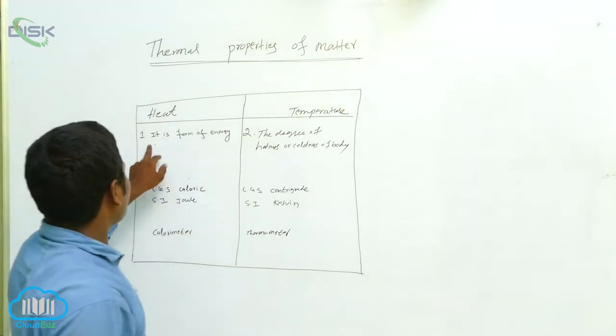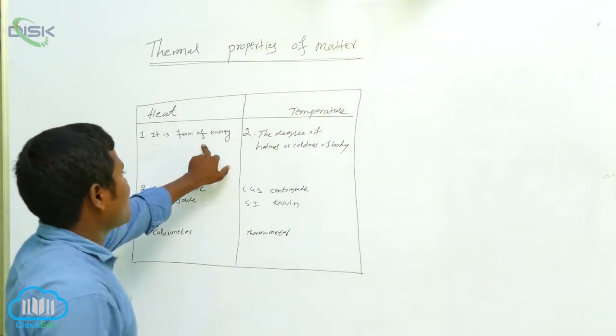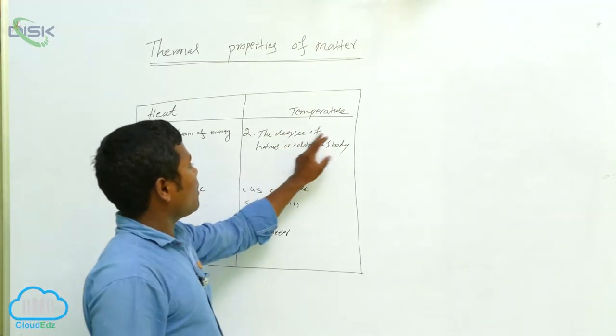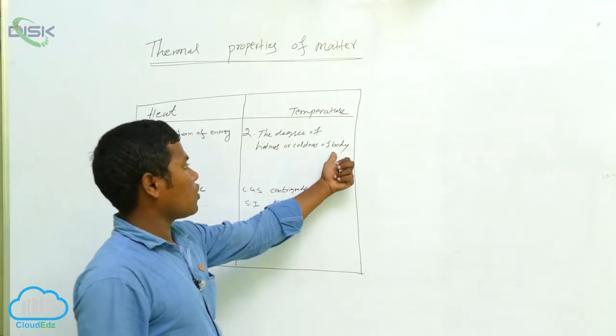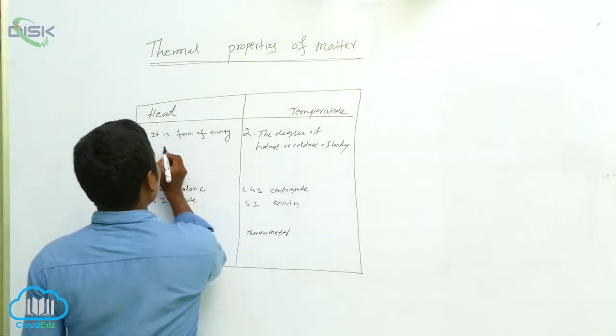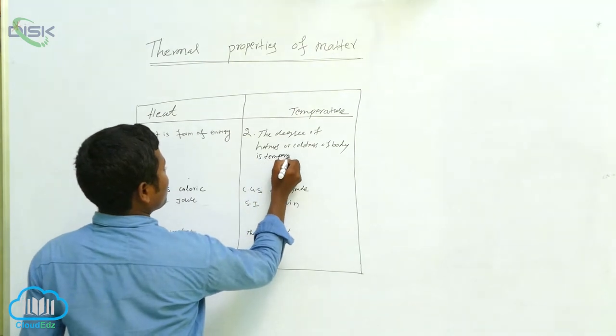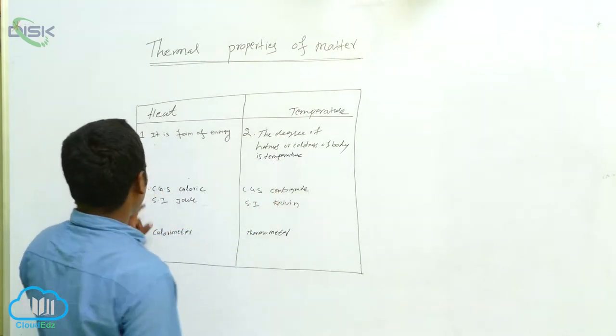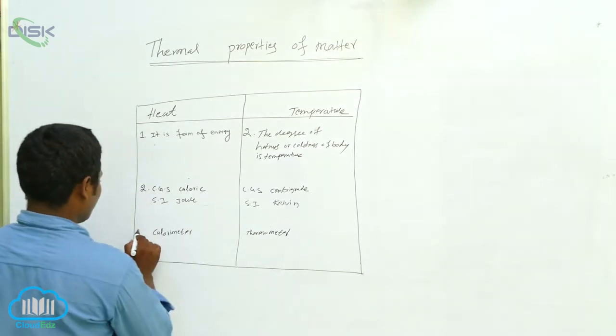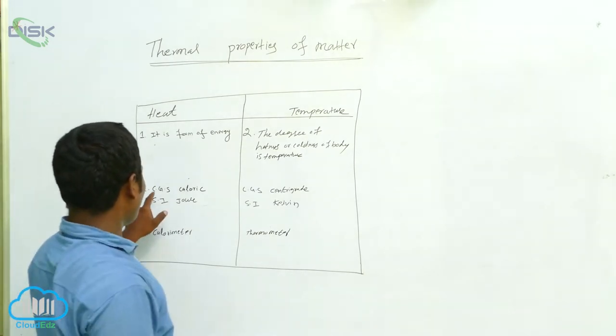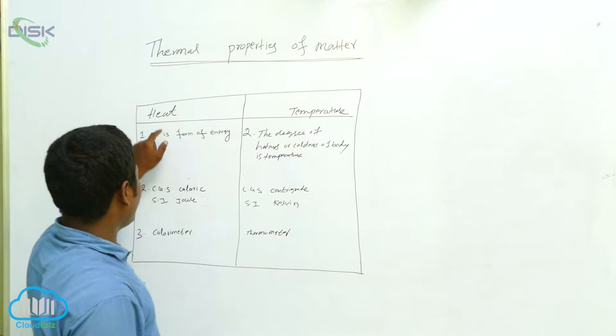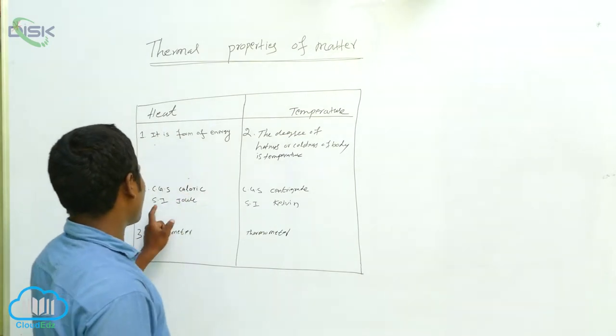So what is the first one? It is a form of energy. Next, the degree of hotness or coldness of body is called temperature. Next, two, another differences - CGS, how we are measuring it: calories. Next, SI, how we are measuring.